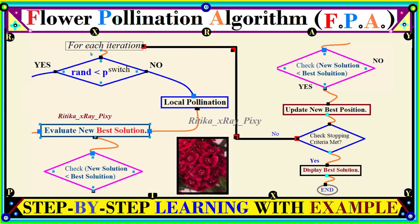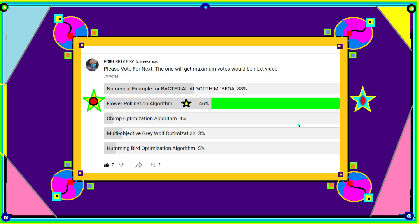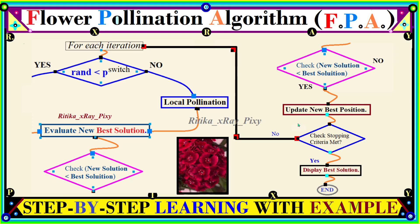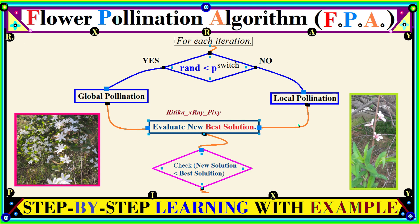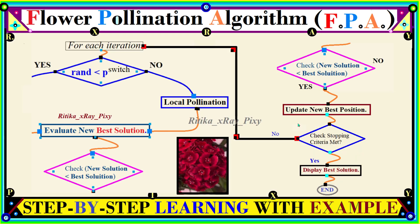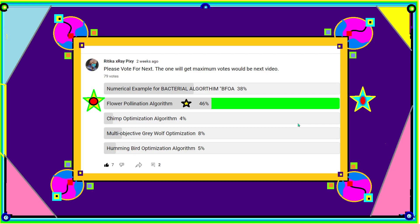So in this video we discussed what is pollination, the different types of pollination, how this process occurs, and how this algorithm uses the pollination concept to solve optimization problems. That's all about this video. If you have any questions, you can comment below. Thanks for watching.